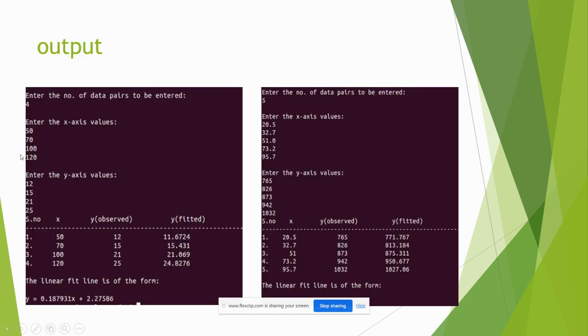This is our output values. First, we have to give input X values 50, 70, 100, 120 and enter the Y values. By using this, we have to predict a linear regression line. By this linear regression line, we have to conclude that whatever we given the X values, we have to conclude the output values.